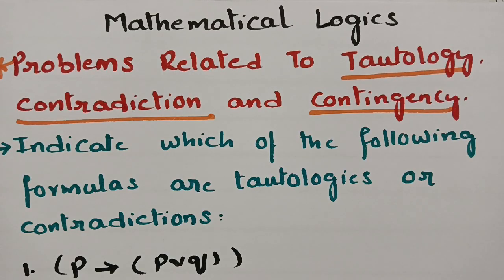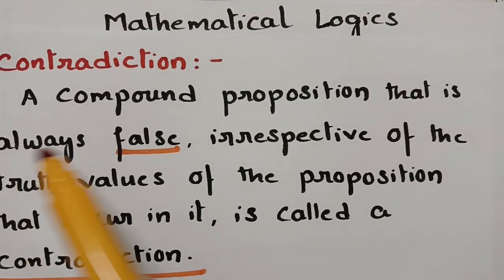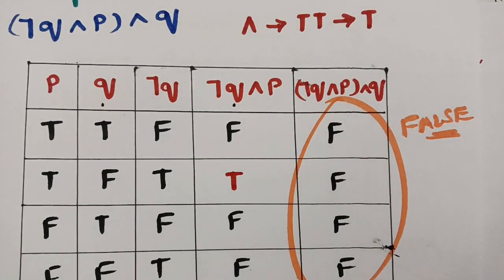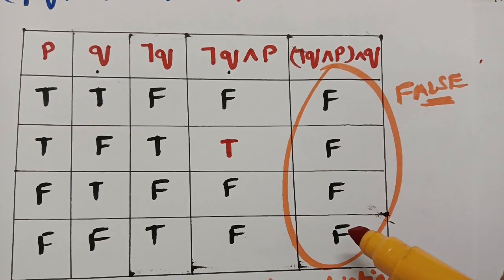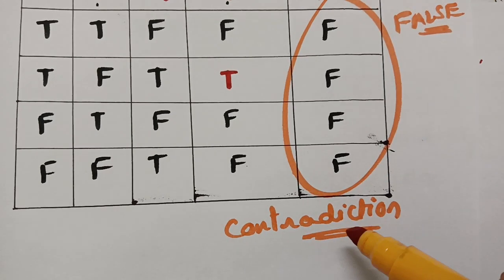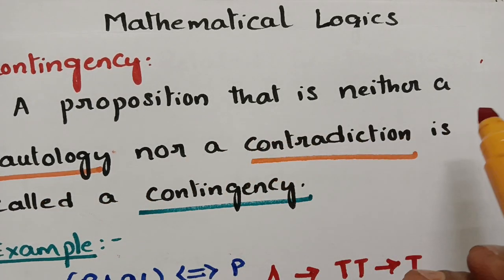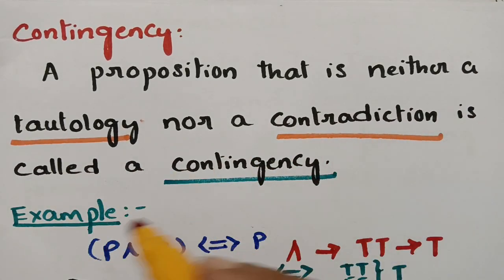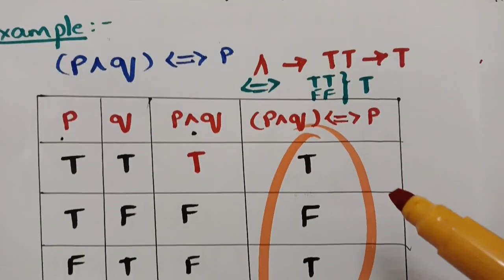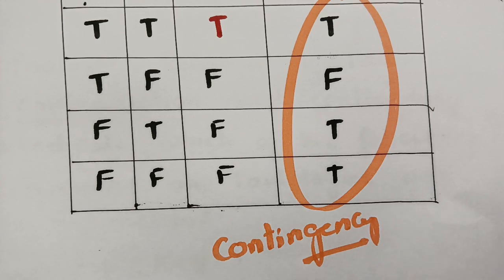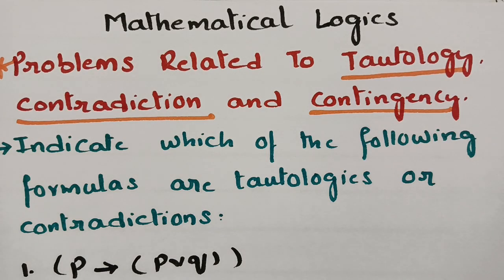Next, what is contradiction? Contradiction is nothing but a compound proposition that is always false. If the last end of the statement is always false, it is a contradiction; if it is always true, then it is a tautology. And next, what is contingency? The proposition that is neither a tautology nor a contradiction is called contingency. If it is a mix of true and false, then it is called contingency.